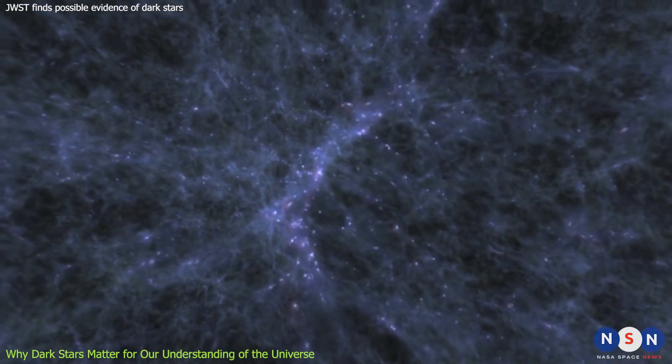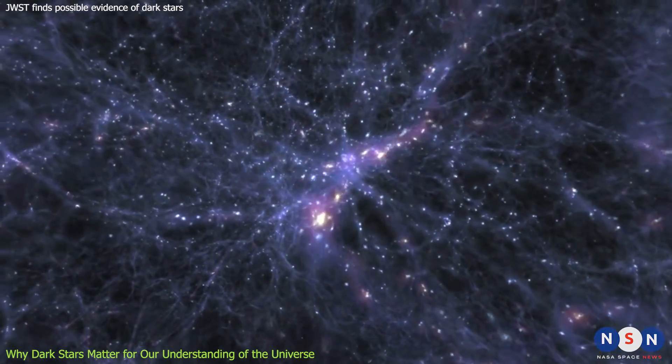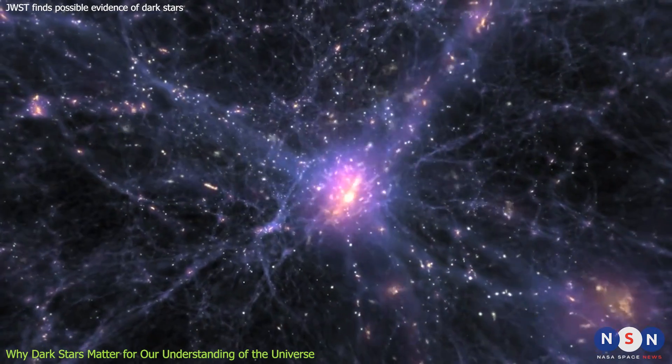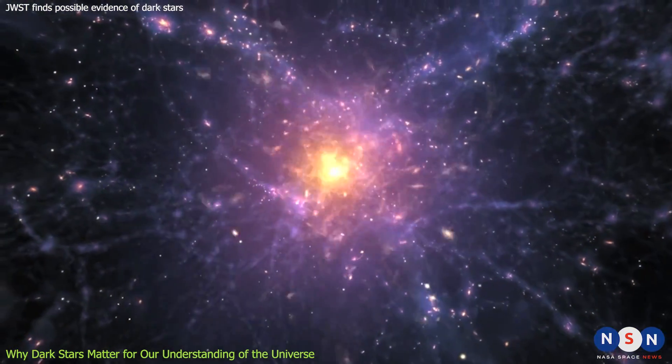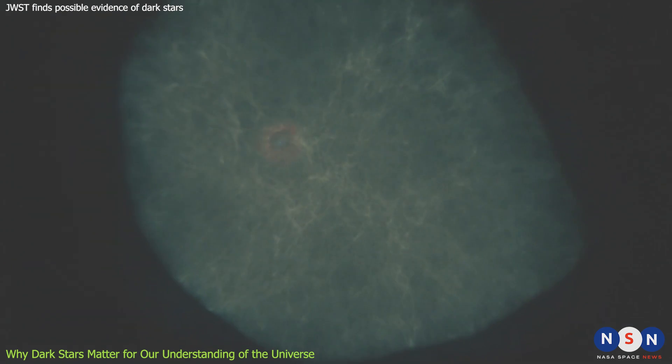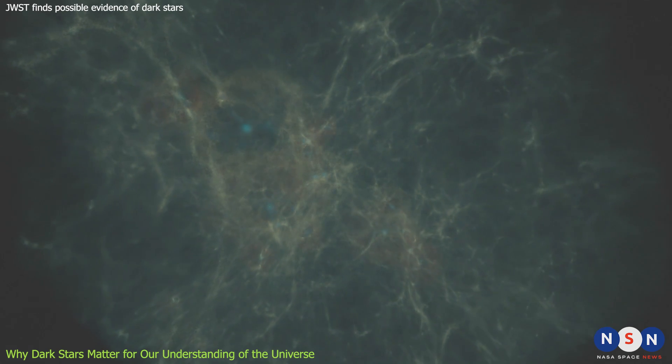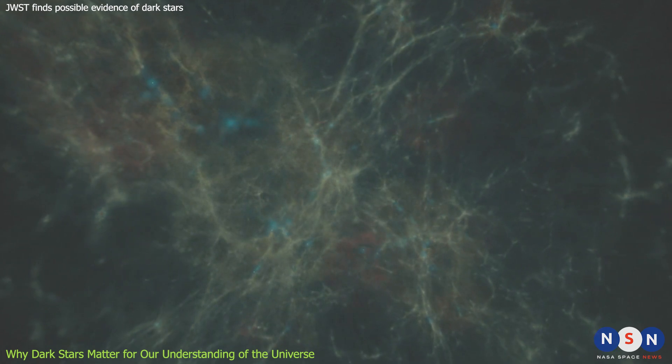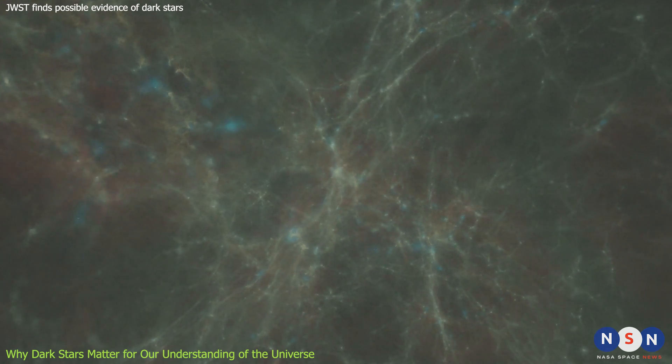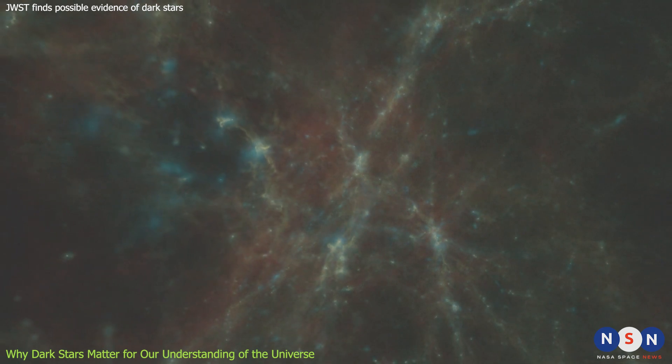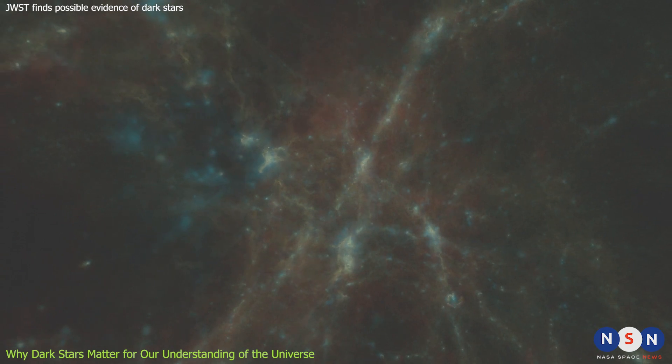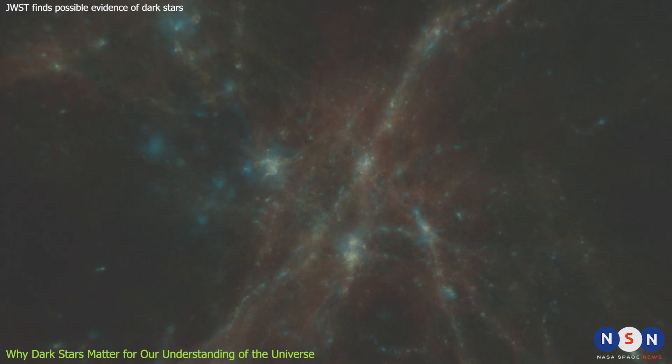Dark stars could also help us solve some of the biggest puzzles in cosmology. For example, they could explain how the first galaxies formed in the universe. According to the standard model of cosmology, the first galaxies formed from the gravitational collapse of clouds of gas and dark matter in the early universe. However, it is not clear how these clouds could cool down enough to form stars and planets. Dark stars could provide a source of cooling by emitting infrared radiation that would carry away some of the heat from the gas.